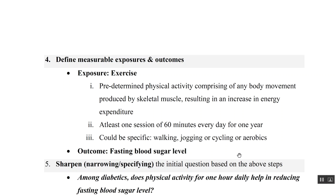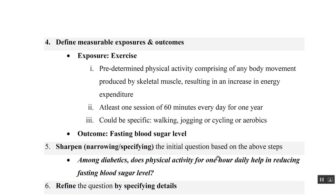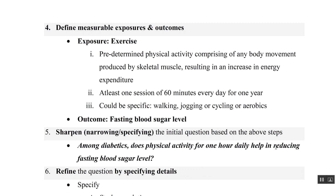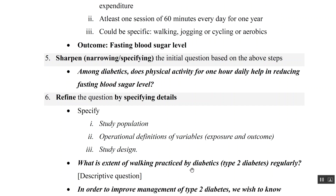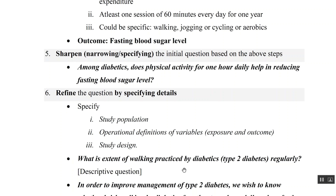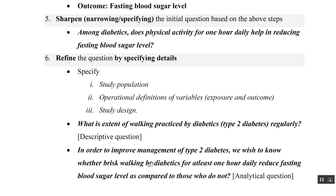We specify that at least one session of 60 minutes every day for one year should be followed, and further define the type of activity — walking, jogging, or cycling. We narrow down to: among diabetics, this physical activity for one hour daily reduces fasting blood sugar. For a descriptive study, the question becomes: what is the extent of walking practiced by diabetics regularly? For an analytical study: does brisk walking by diabetics for at least one hour daily reduce fasting blood sugar level compared to those who do not?